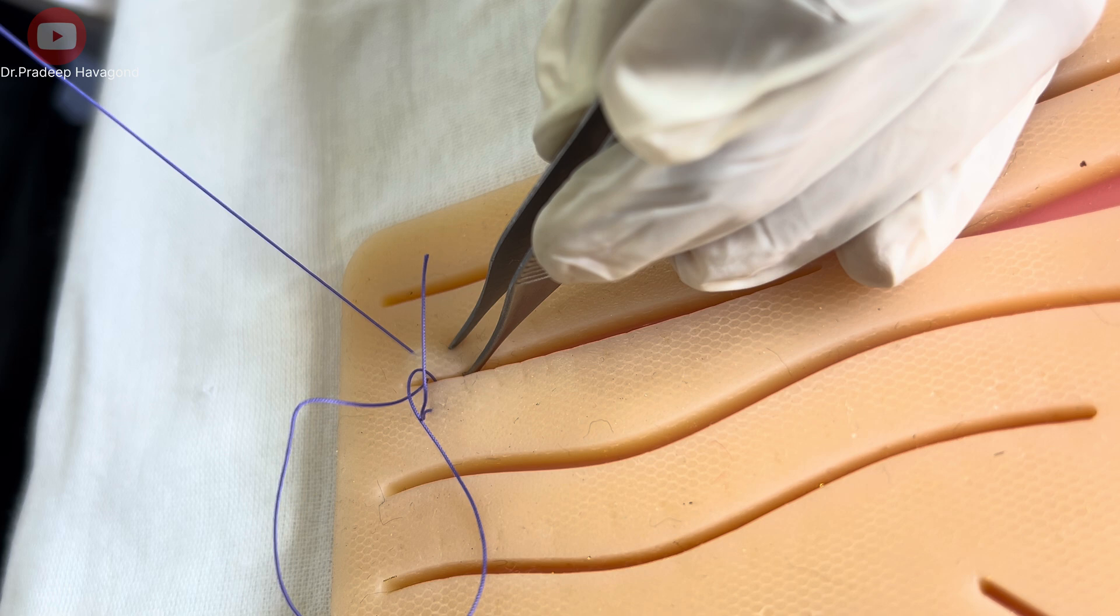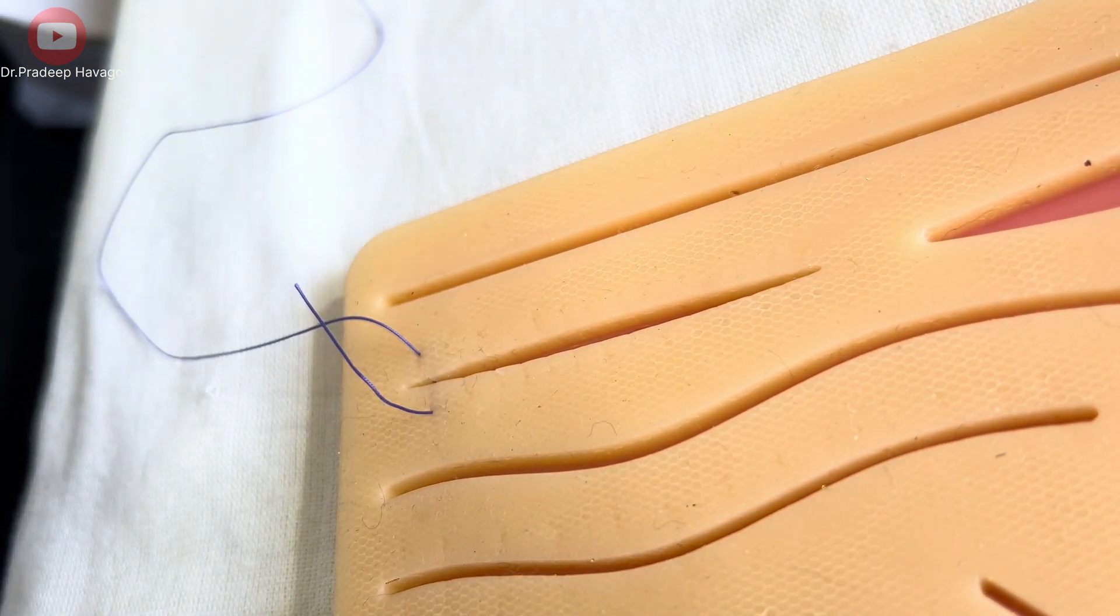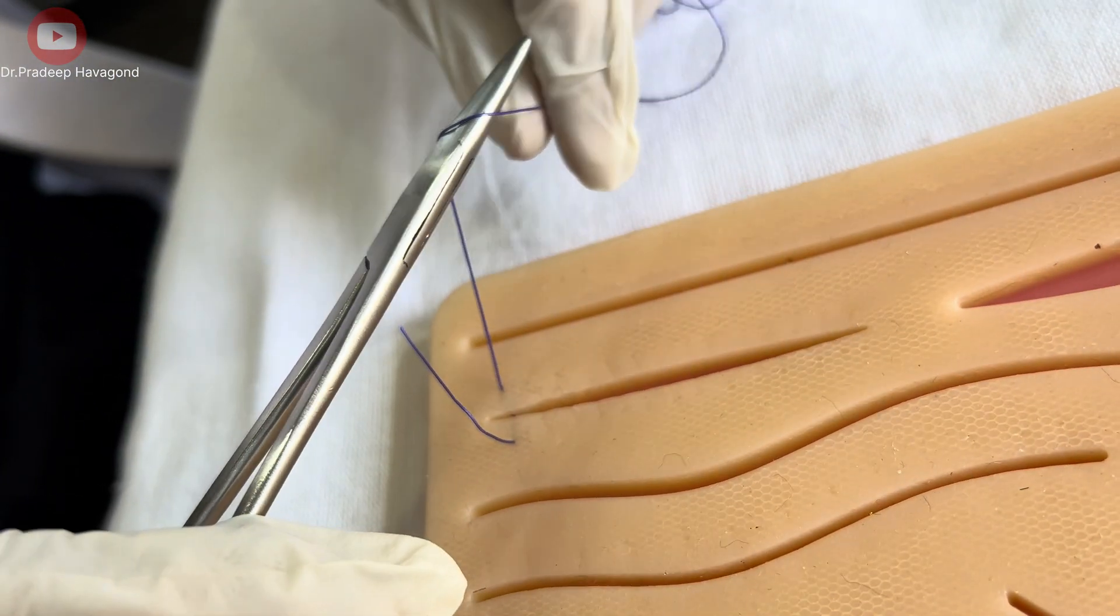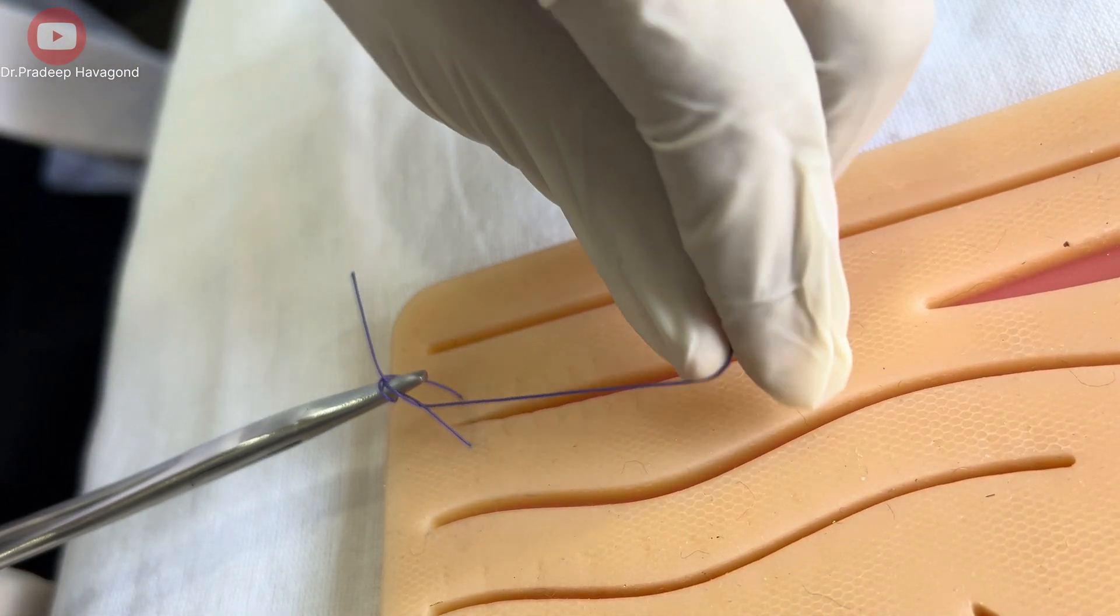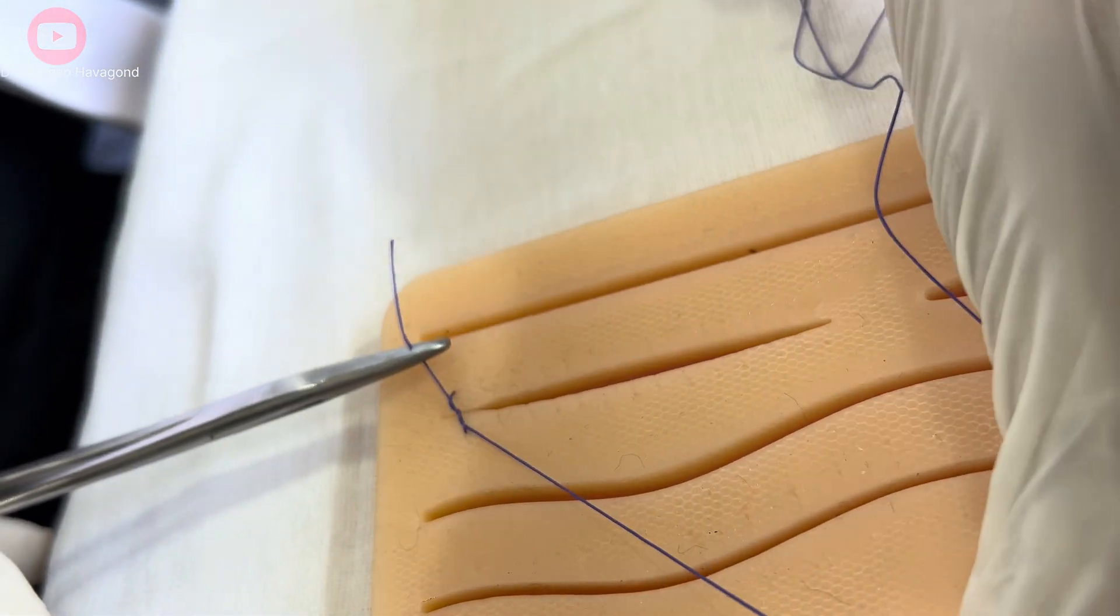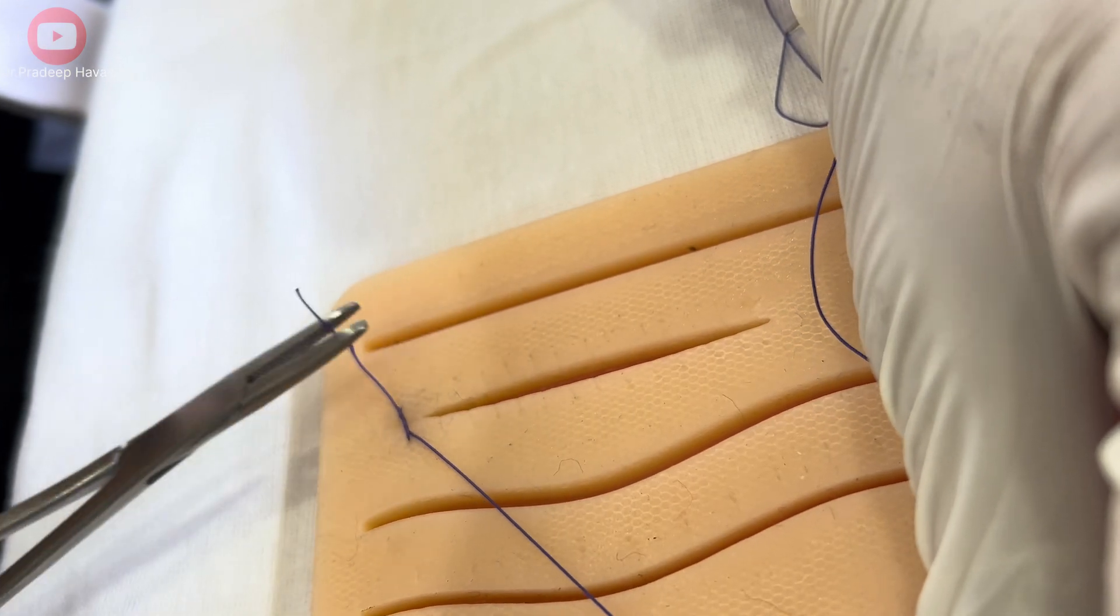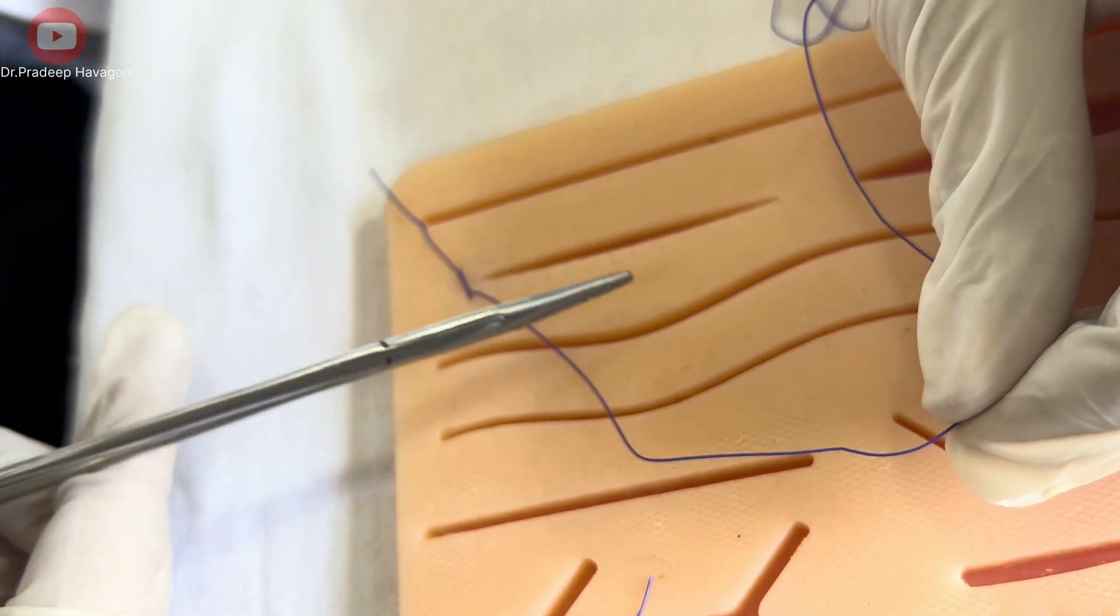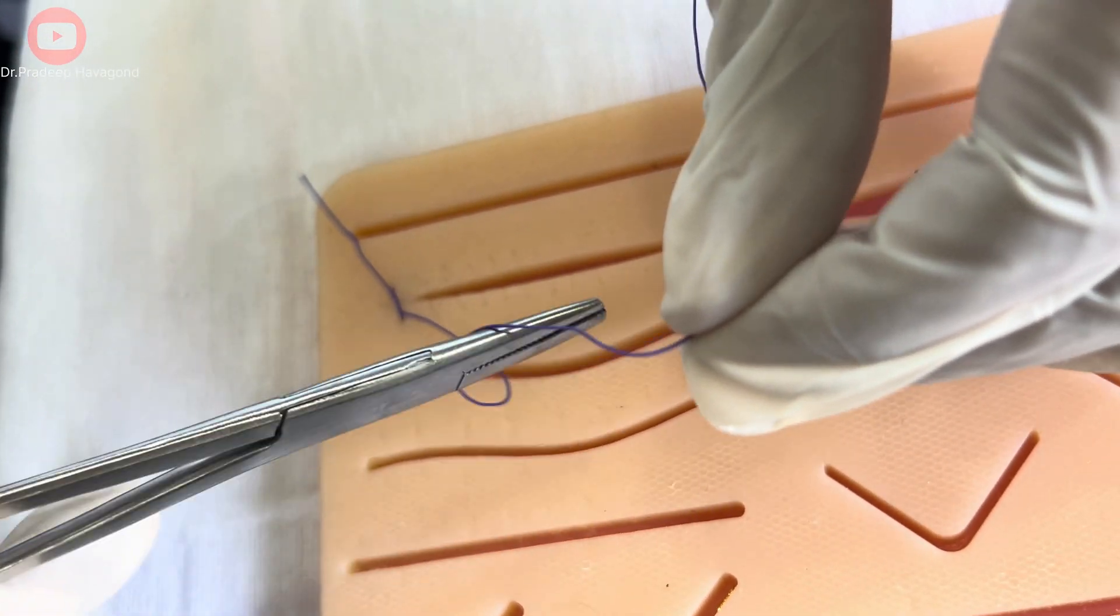Now, we will tie the surgeon knot here. Needle holder has to be held in one hand and long end of the suture on the other hand, and two throws have to be taken over the needle holder. Now, with the help of the jaw, you have to hold the thread. The short end of the suture has to be held, and its direction has to be opposite.